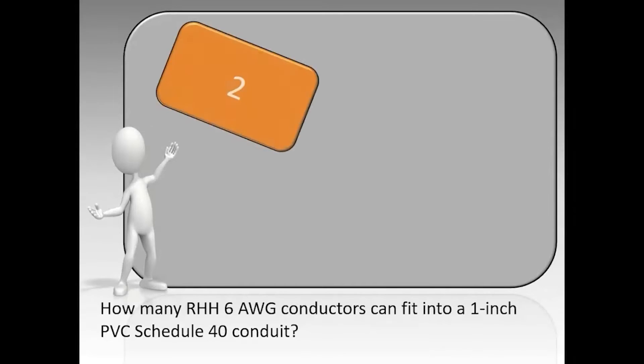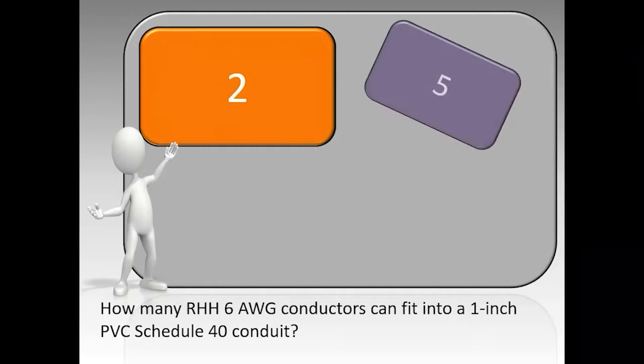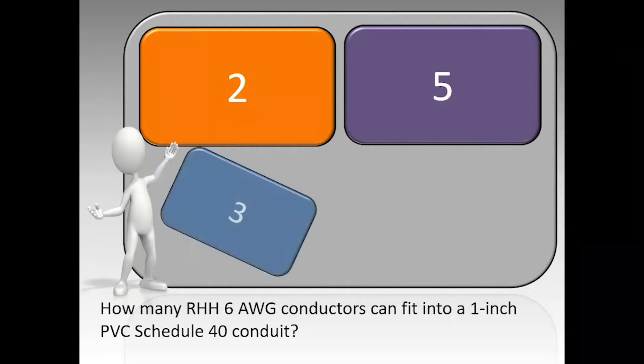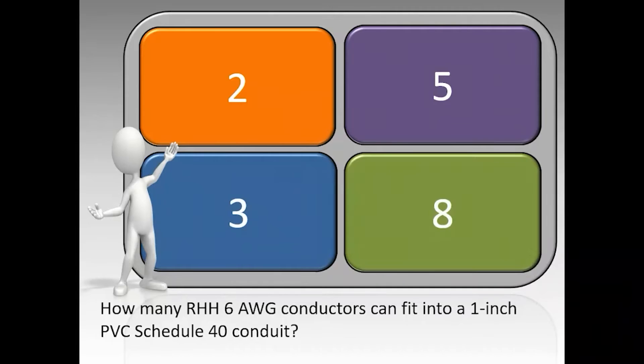How many RHH 6-gauge conductors can fit into a one-inch PVC schedule 40 conduit? The correct answer is three.